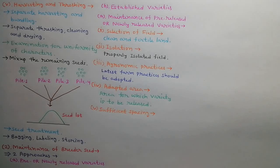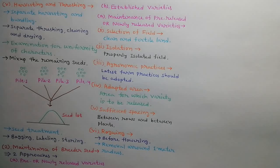Fifth step is sufficient spacing. There must be sufficient space between rows and between plants so that individual plants can be examined and off-type plants can be removed easily. Sixth step is rogging. If rogging is done after flowering then all plants in one meter radius around the infected plant must also be removed to prevent contamination.